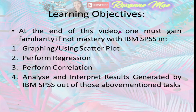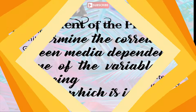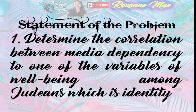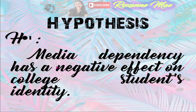For today's video, I will teach you how to make a scatterplot, perform regression and correlation in IBM SPSS, and we will interpret all the results. For example, in a statement of the problem: to determine the correlation between media dependency and one of the variables of well-being among Judeans, which is identity. The hypothesis is that media dependency has a negative effect on college students' identity.